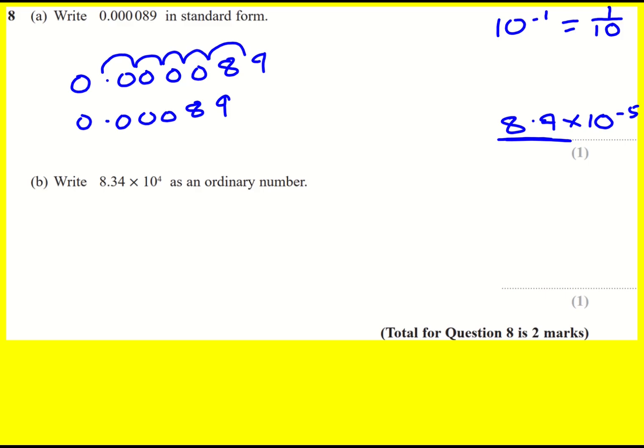8.34 times 10 to the 4 as an ordinary number. We do this in a very similar way. So decimal point is here. Now I've got 8.34 and I'm just timesing it by 10 to the 4. Every time I times by 10, the decimal point is going to move 1 to the right because I'm moving now to the left up my place value table.